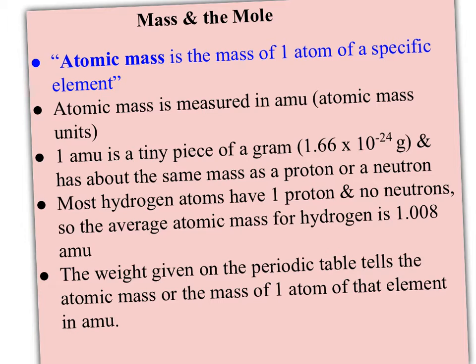Atomic mass is measured in this unit called an atomic mass unit or AMU. One AMU is a really tiny piece of a gram, 1.66 times 10 to the minus 24 grams. If you remember a gram is about the mass of one M&M, that's a really small amount. One AMU is also about the same mass as a proton or neutron. In fact, unless you're working in some really high-tech chemistry physics stuff, we can say an AMU is the same mass as a proton or neutron.